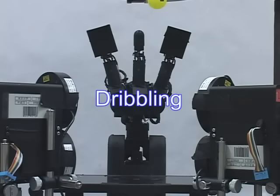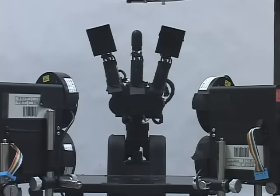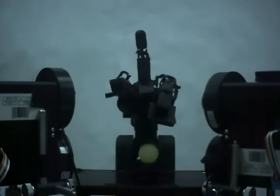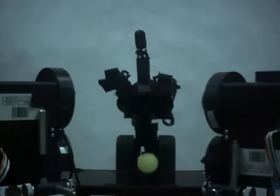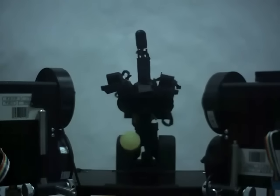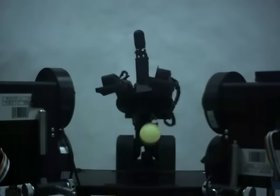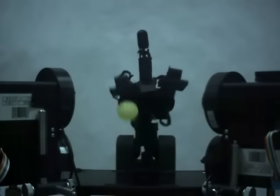This is dribbling. High-speed active control enables the maintaining of a periodically stable motion. We call it dynamic holding. The dribbling period is around 100 milliseconds.